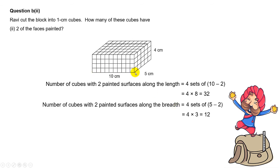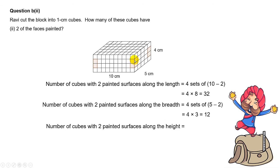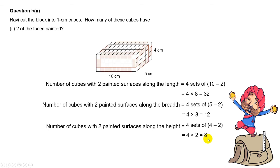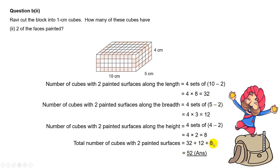After considering the length and the breadth, let's now look at the height. For the height, the cubes with 2 painted surfaces will be here, here, here, and behind. So it will be 4 sets of 2, which is 4 times 2 — you get 8 cubes. To find the total cubes with 2 faces painted, we add everything up: 32 plus 12 plus 8, giving a final answer of 52 cubes.